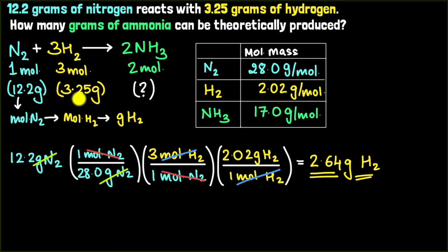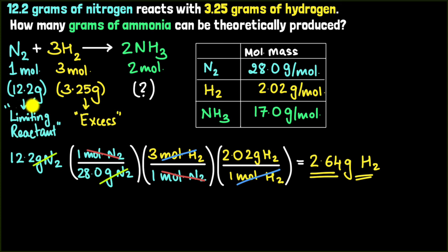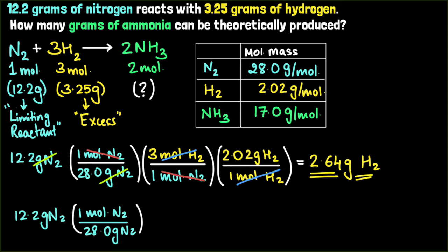We have 3.25 grams of hydrogen, which is way more than the 2.64 grams necessary. This means hydrogen is in excess, and nitrogen is the limiting reactant. The entire 12.2 grams of nitrogen will be completely consumed. Now I use nitrogen to calculate how much ammonia is produced. Convert 12.2 grams of nitrogen to moles: multiply by one mole of N₂ per 28.0 grams of N₂. Then convert to moles of ammonia: multiply by two moles of NH₃ per one mole of N₂.